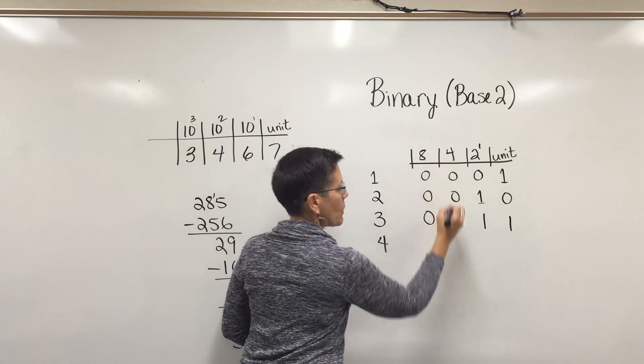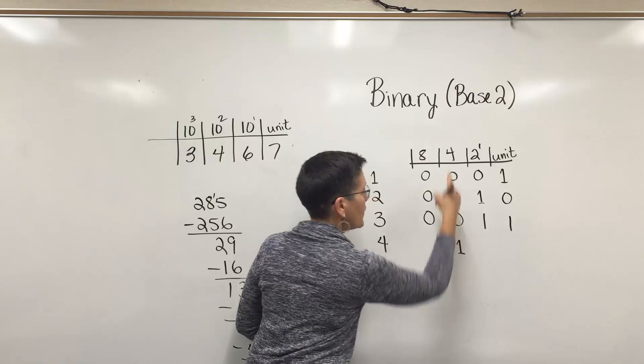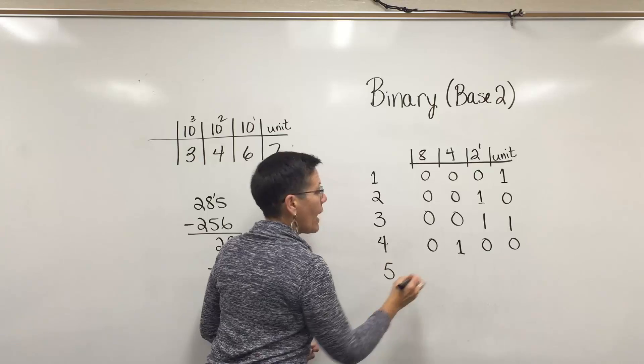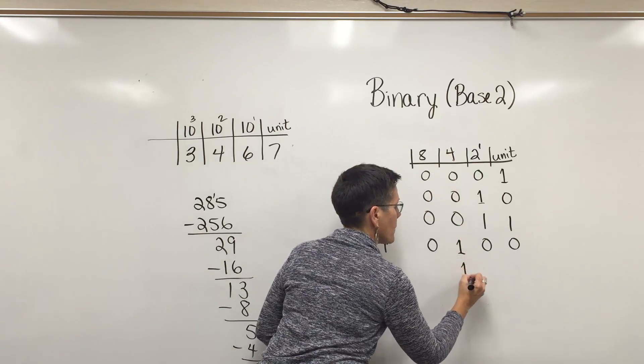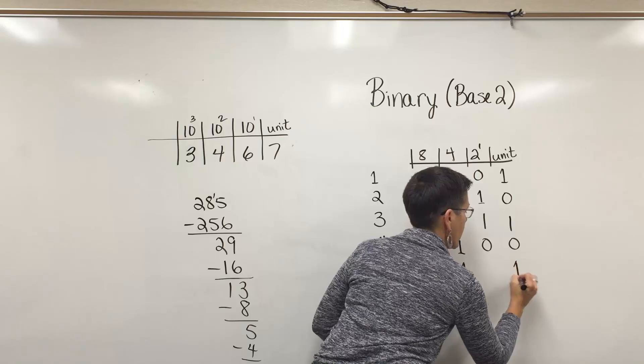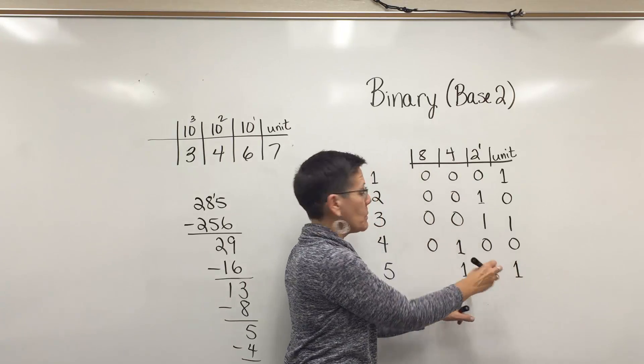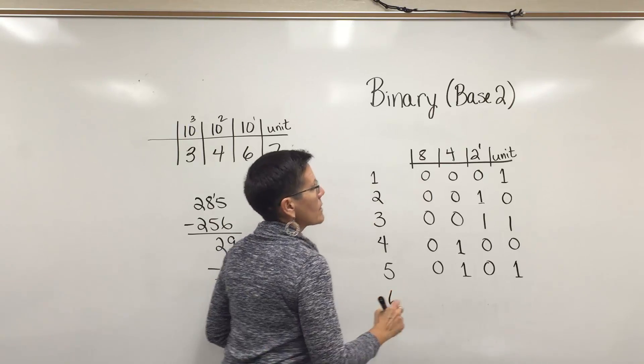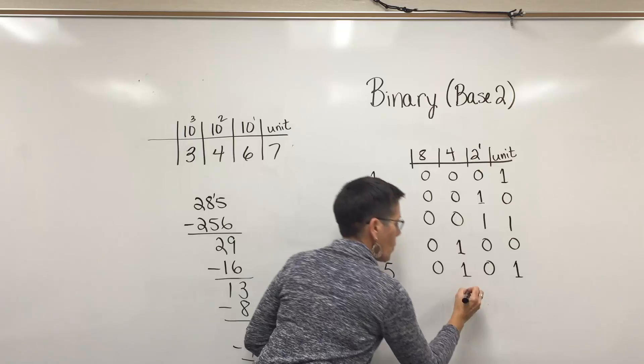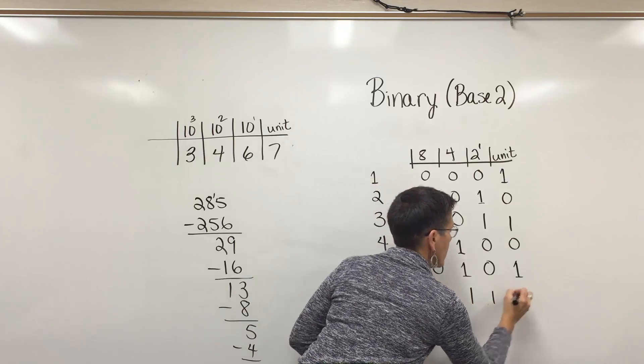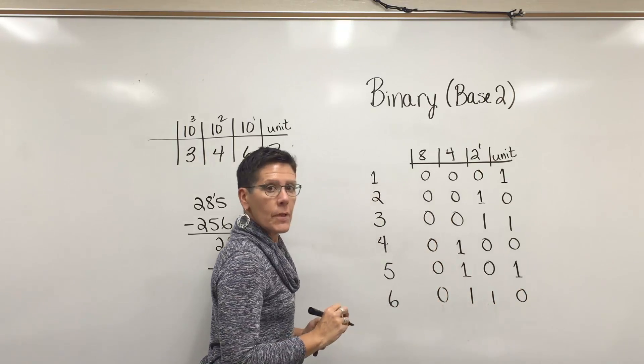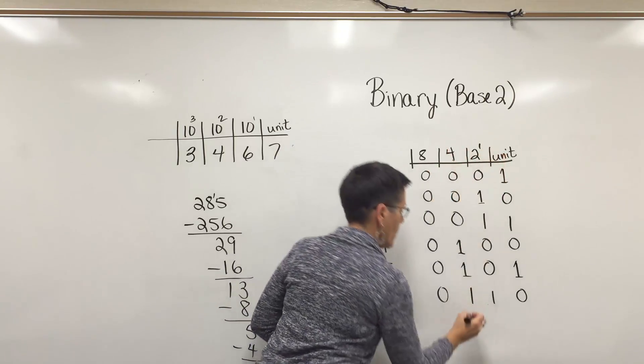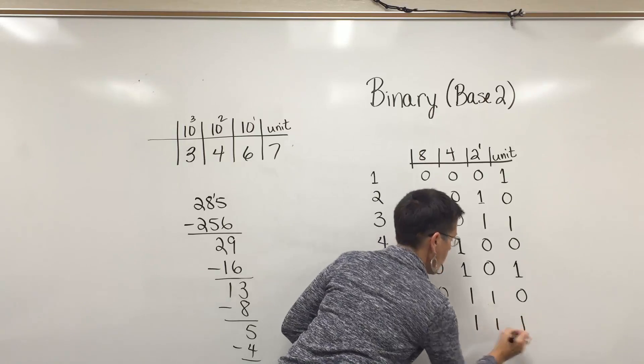The number 3 is a 2 and a 1. 2 plus 1 is 3, and they have all the numbers all the way up to 0 through 15 memorized. Remember that this is the 4's position, 2 to the 2nd power. This is the 8's position. The number 4 is represented by a 1 in this position and 0's in all the others. The number 5 has to include a 4 and a 1.